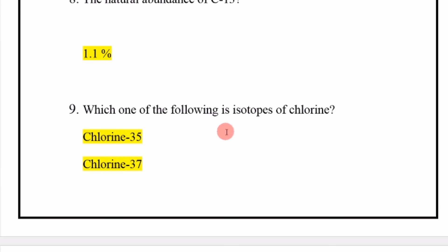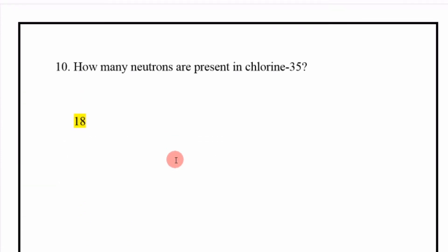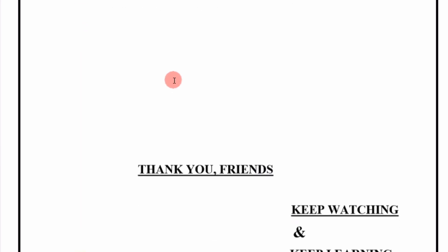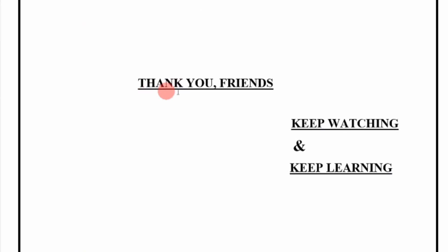Next: which one of the following is an isotope of chlorine? The answer is Chlorine-35 and Chlorine-37. Next: how many neutrons are present in Chlorine-35? The answer is 18. Thank you friends, keep watching and keep learning. Allah Hafiz.